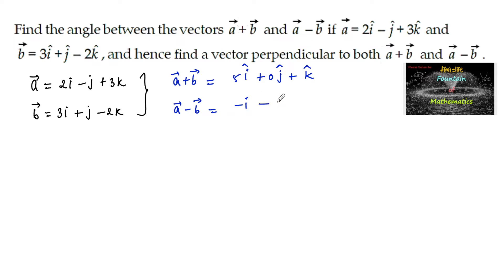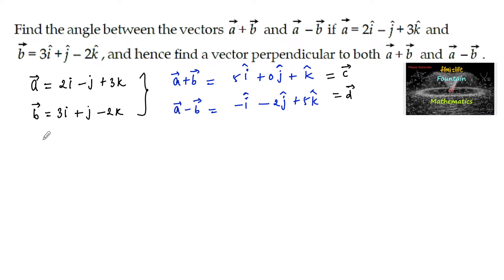Continuing a minus b: minus j minus j, that is minus 2j, and 3 plus 2, that is 5k. Let us consider these two vectors as c and d. We need to find the angle between c and d, and find a vector perpendicular to both a plus b and a minus b. Consider c dot d, the dot product between the two vectors c and d.